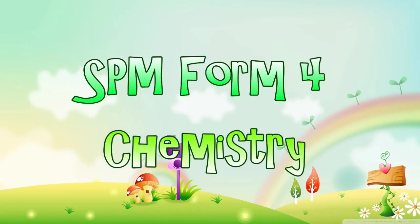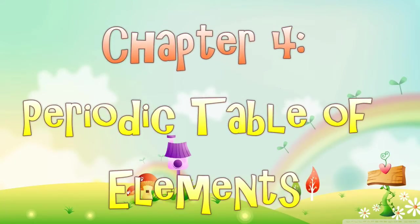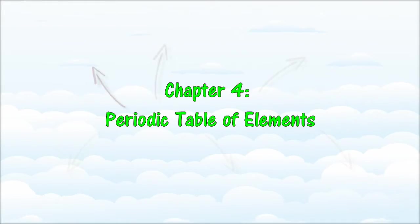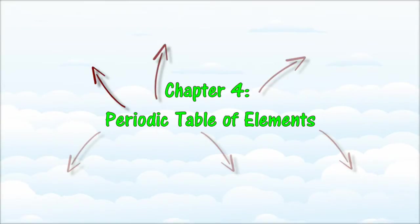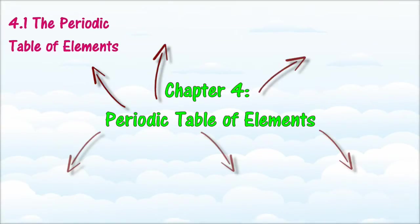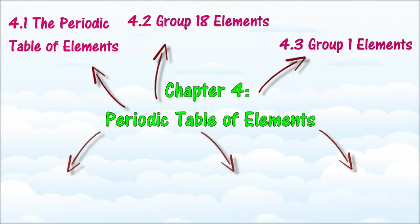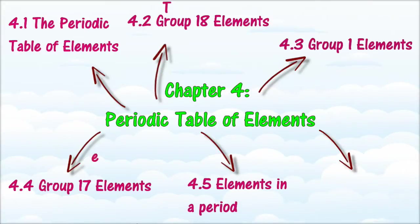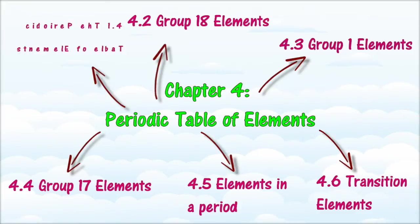SPM Form 4 Chemistry, Chapter 4: Periodic Table of Elements. In this video, we will summarize the expected learning outcomes of Chapter 4 in the form of a concept map. We will learn about the periodic table — the pattern of arrangement, characteristics, and reactivity of elements. There are six main sections: 4.1 The Periodic Table of Elements, 4.2 Group 18 Elements, 4.3 Group 1 Elements, 4.4 Group 17 Elements, 4.5 Elements in the Period, and 4.6 Transition Elements.